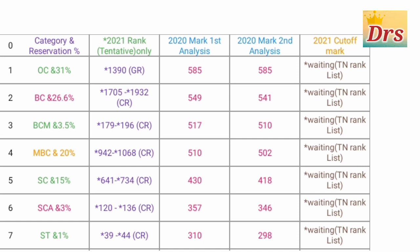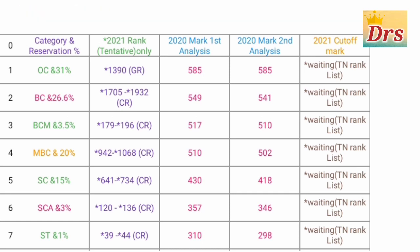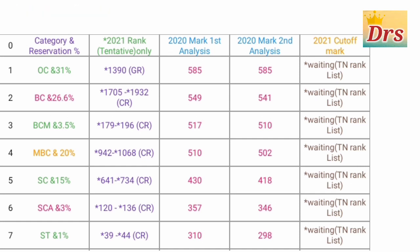Next one is the SCA category. For SCA category, if you have a community rank, you have to analyze the rank from the range of 120 to 150. So if you have a community rank last year, you have to analyze the rank. First analysis: 3097. Second analysis: 356.